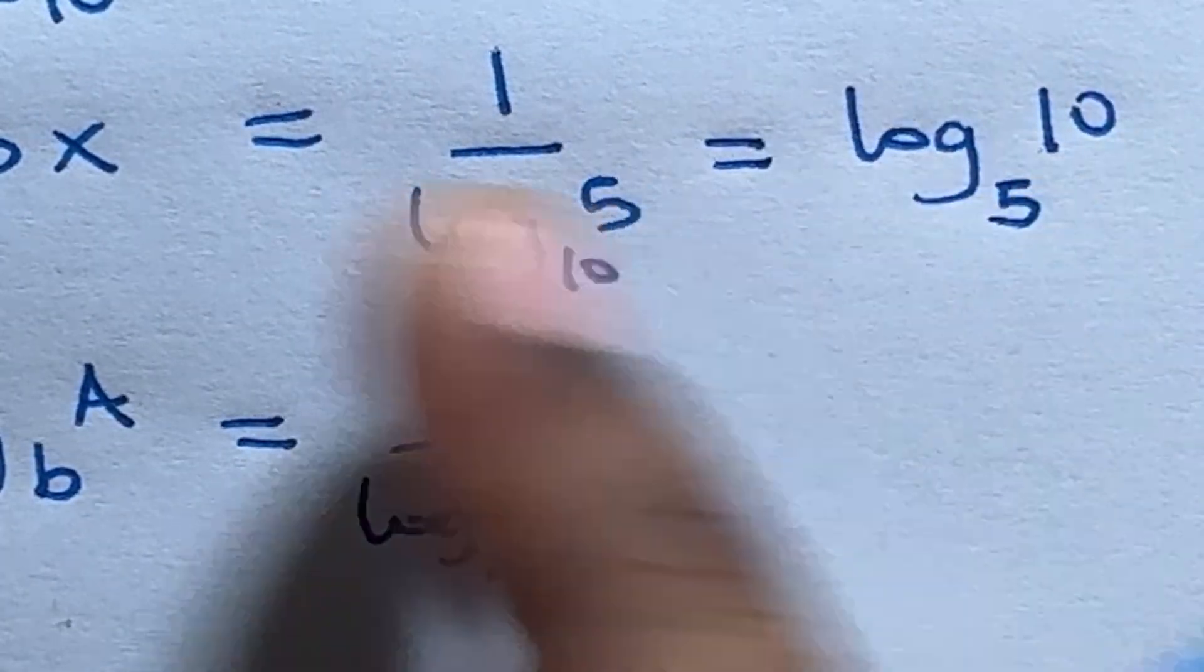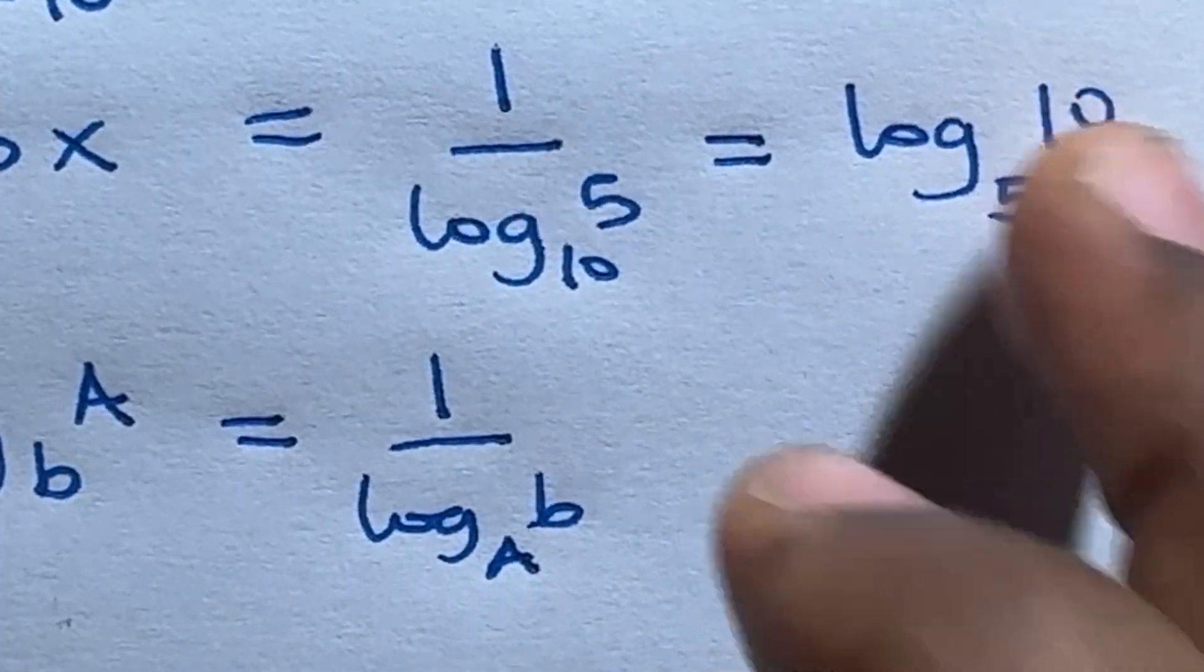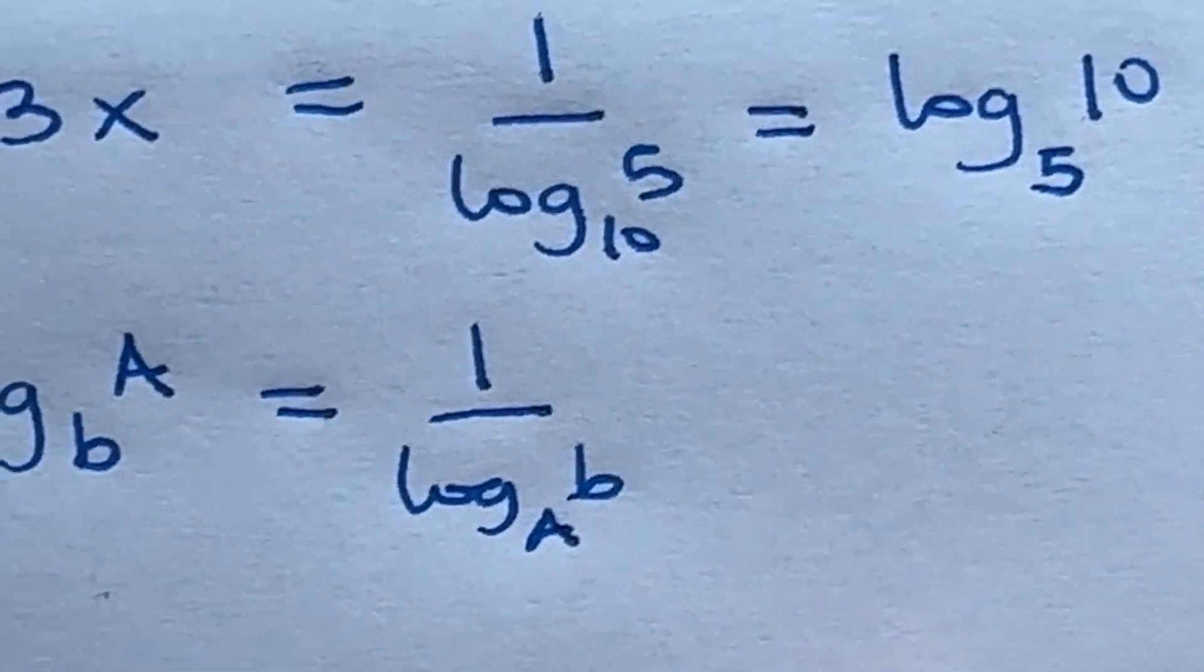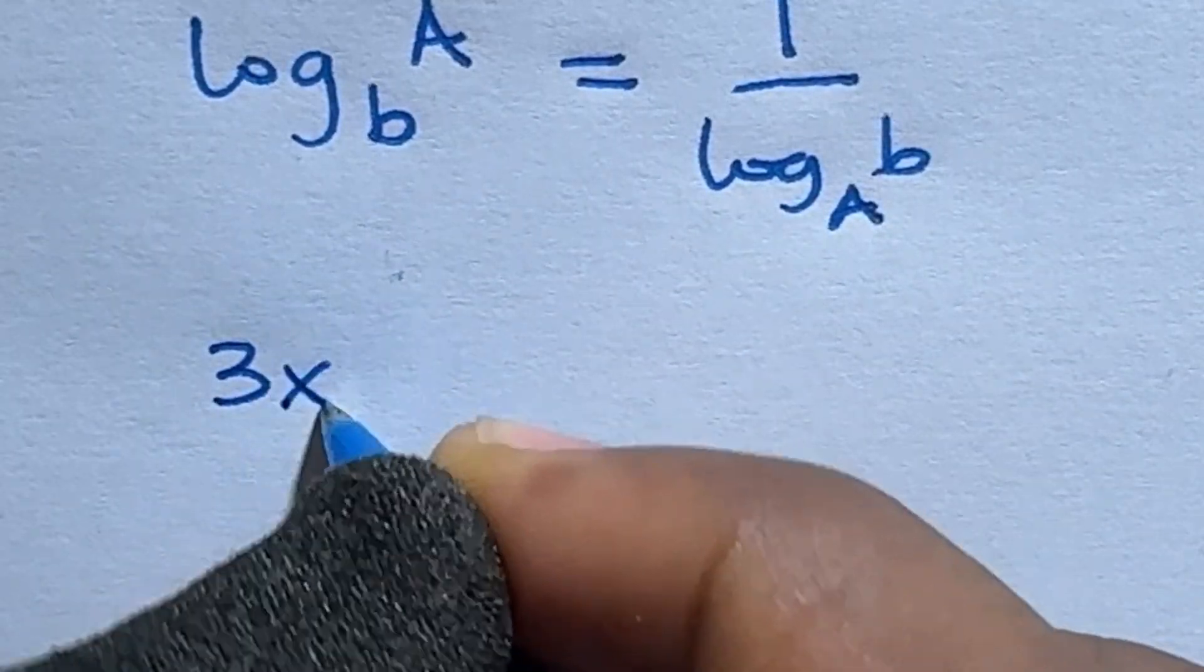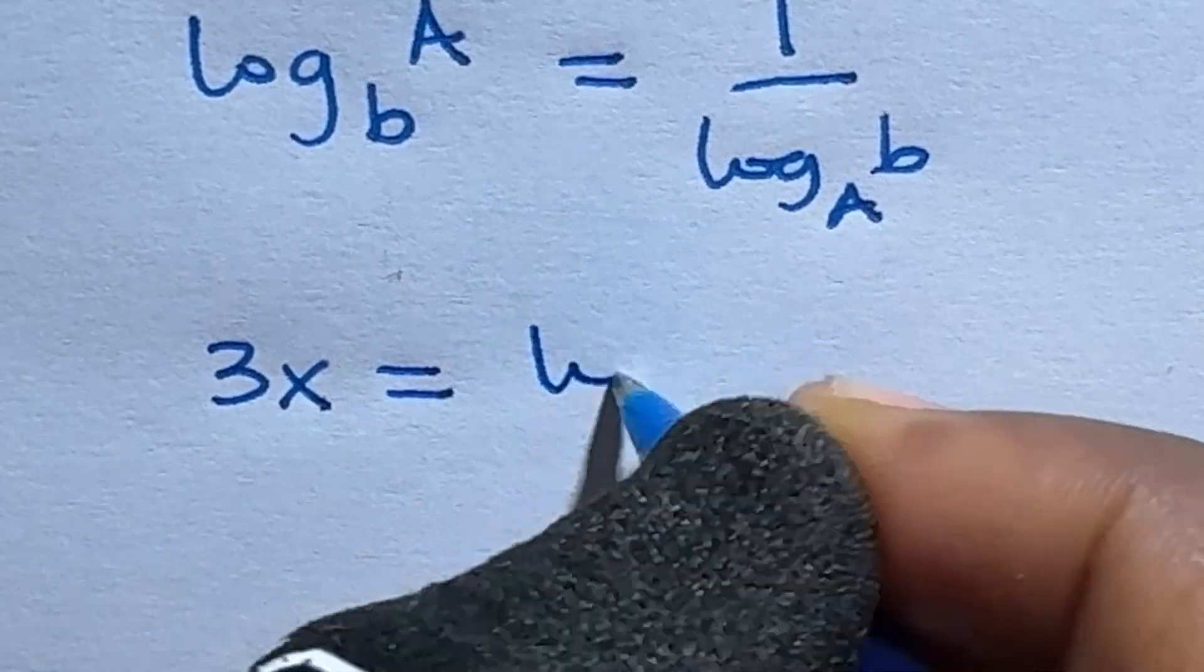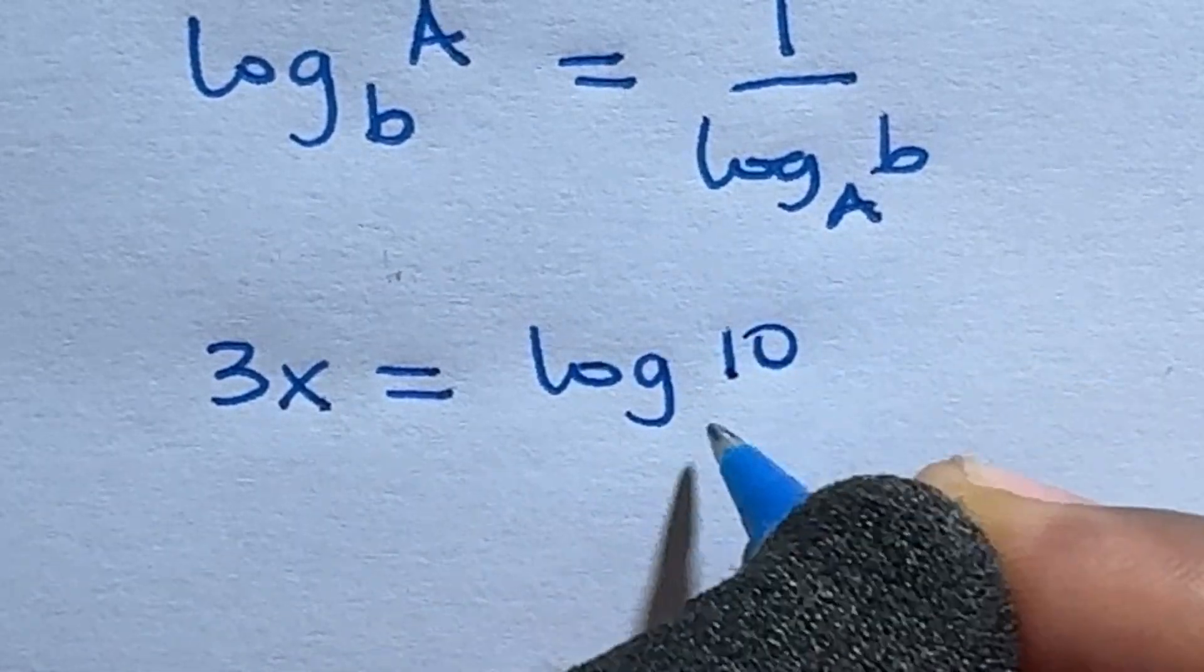So either this or this is still the same thing, but I will go with this. Therefore, 3x is equal to log 10 base 5.